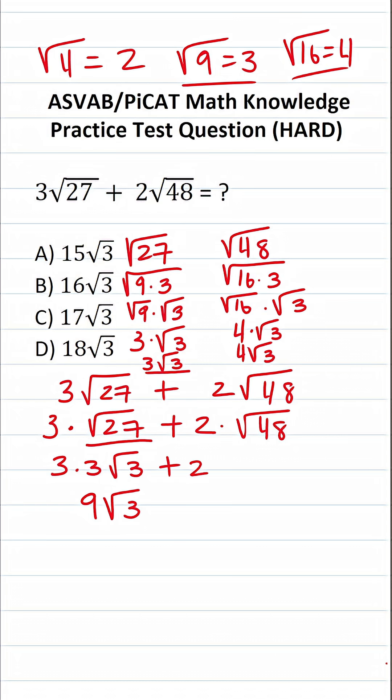All right, so this becomes plus 2 times 4 square root 3. 2 times 4 is 8. So, this is 8 square root 3.